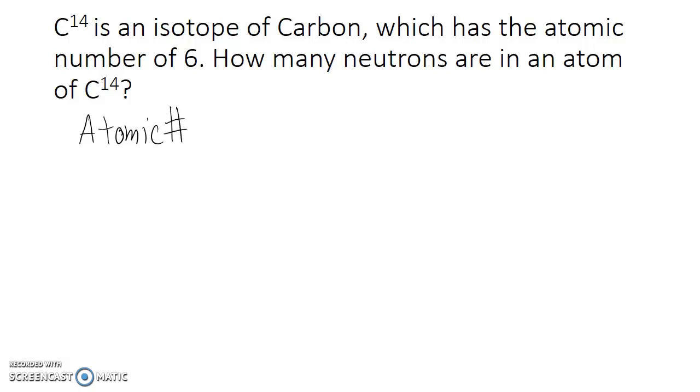The atomic number of an atom is equal to the number of protons. The mass number of an atom, and this is what's given in an isotope, is going to be the number of protons plus the number of neutrons.